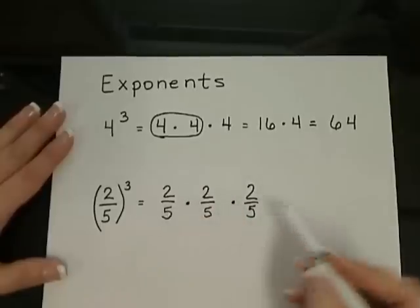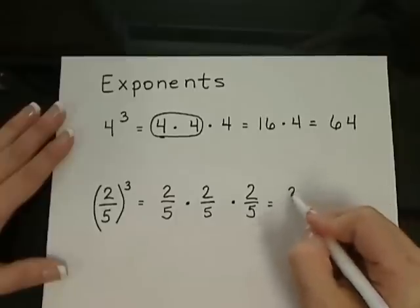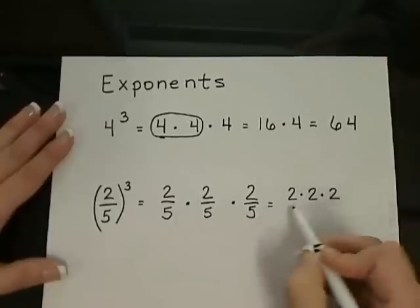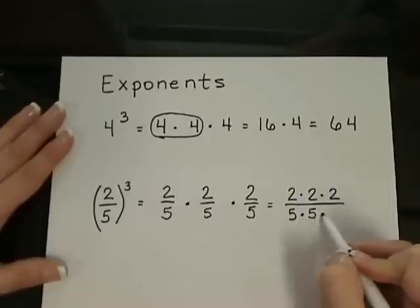We're going to multiply across the top here. So 2 times 2 times 2. And on the bottom, we'll also multiply 5 times 5 times 5.